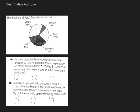Let's start with the question. Here we are given the breakup of Raju's monthly expenses in a pie chart. In this pie chart, the transport expense is 8% of total expense, food is 22%, education 20%, rent 15%, and others is 35% of the total expense.